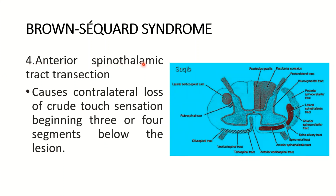Number four: anterior spinothalamic tract lesion. This is the anterior spinothalamic tract. It causes a contralateral loss of crude touch sensation beginning three or four segments below the level of the lesion.